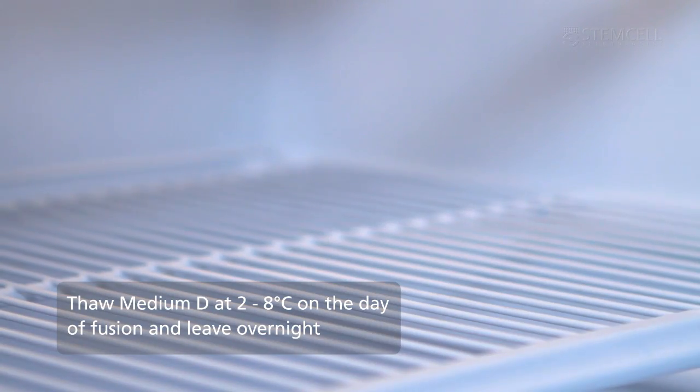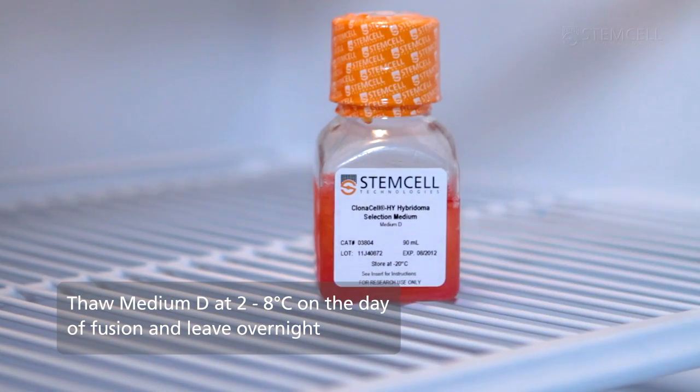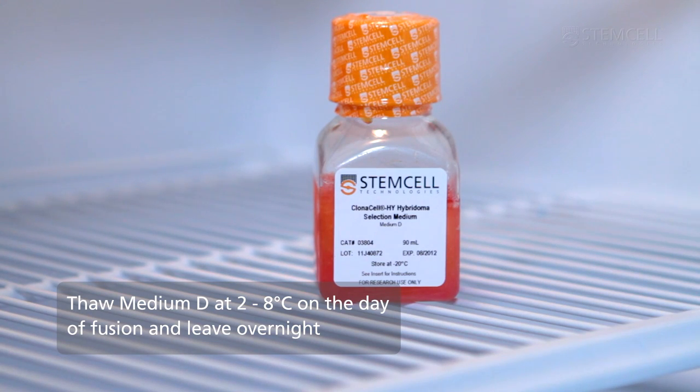To prepare medium D for simultaneous selection and cloning in 96-well plates, thaw medium D at 2 to 8 degrees Celsius on the day of the fusion and leave overnight. It will be required the next day. Do not thaw medium D in a 37 degrees Celsius water bath. This will result in clumping of the methylcellulose.